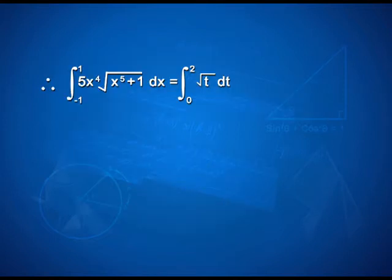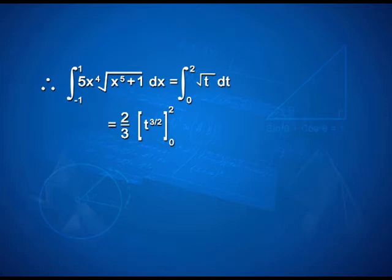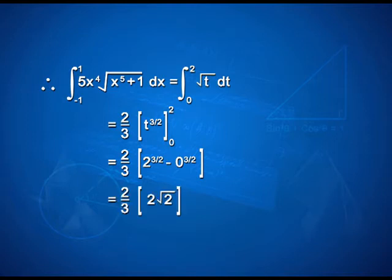Therefore, integral from −1 to 1 of 5x⁴√(x⁵+1) dx = integral from 0 to 2 of √t dt = [2/3 · t^(3/2)] from 0 to 2. On applying limits, we get 2/3 · (2^(3/2) − 0) = 2/3 · 2√2, giving the answer as 4√2/3.